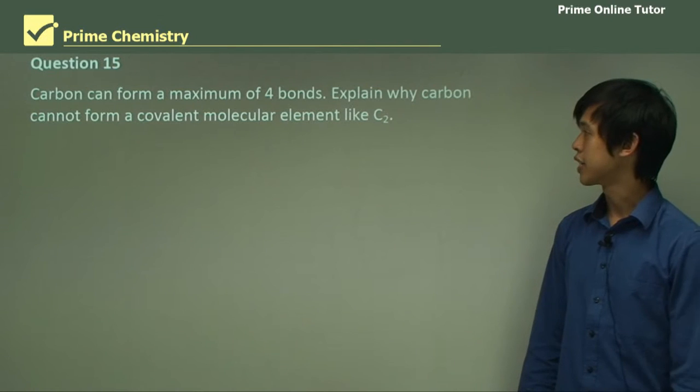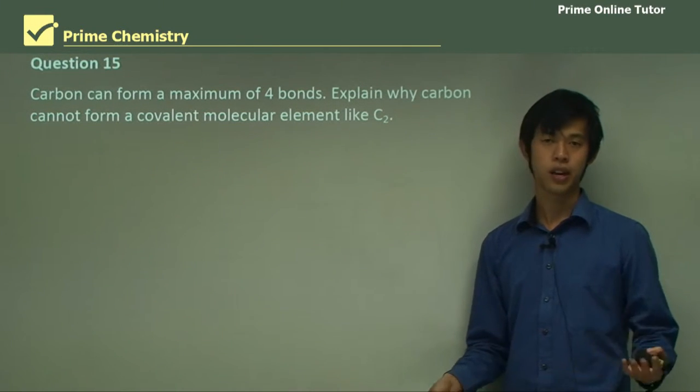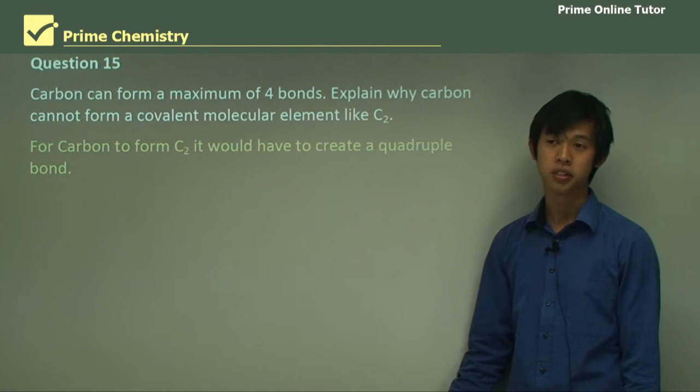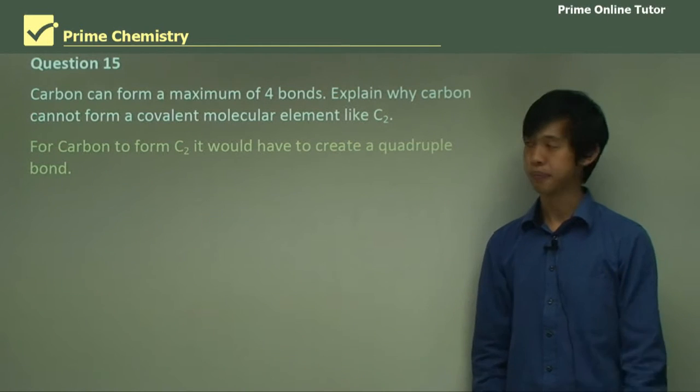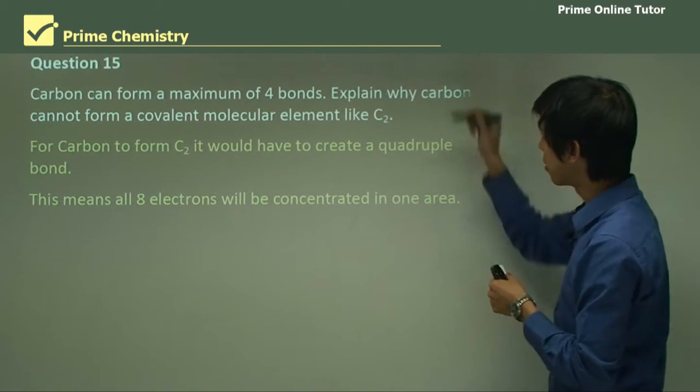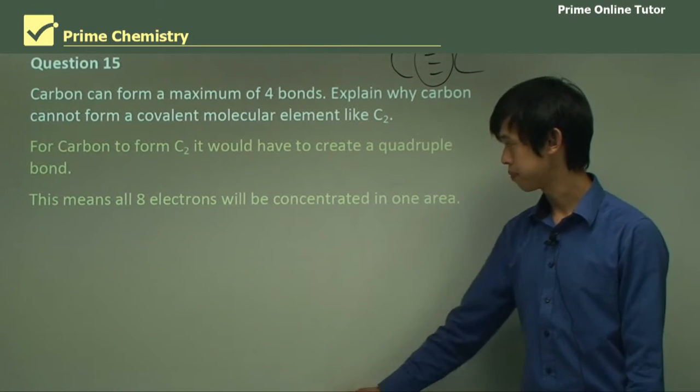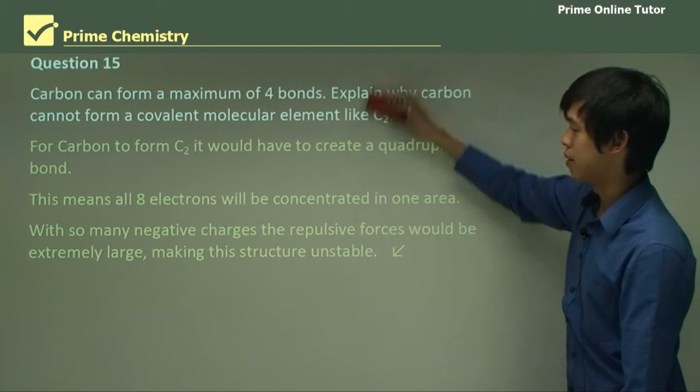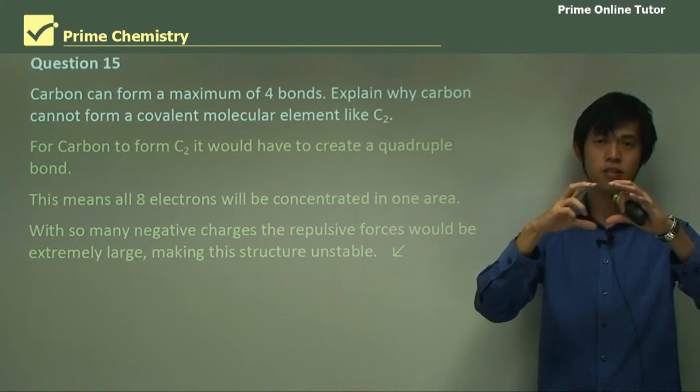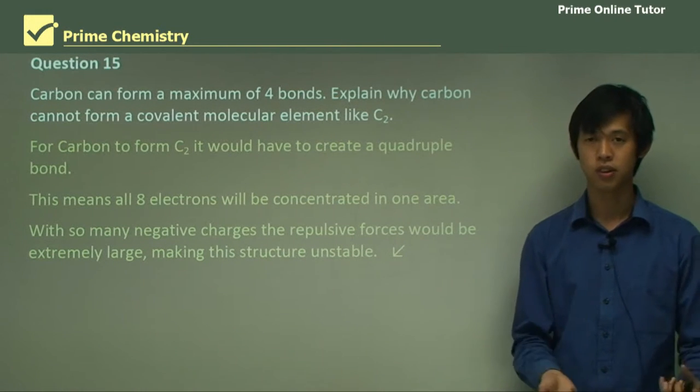So carbon can form a maximum of four bonds. Explain why carbon cannot form a covalent molecular substance like C2. Why is C so different? Well, for carbon to form C2, it would have to form a quadruple bond. So it would have to form four bonds so that both carbons are stable. This means that all eight electrons will be concentrated into one section. If you imagine a quadruple bond, all of the electrons would be here. So that's eight electrons, all in one small area. Now, because you have so many negative charges, the repulsive force would be really big, making this structure very unstable. So with eight electrons sitting there, the repulsive force would be so big that the electrons would just repel each other and smash apart those bonds. So it doesn't make sense to make C2 because it would just be so unstable.